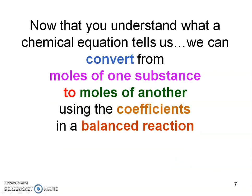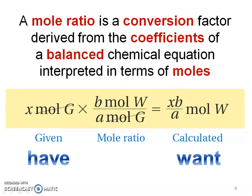So now that you understand what a chemical equation tells us, now we can convert from moles of one substance to moles of another again using those coefficients from a balanced chemical reaction. So this mole ratio gives us this conversion factor and again it's derived from those coefficients from a balanced equation in terms of moles.